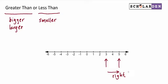That's straightforward when we're talking about positive numbers. We know 2 is greater than 1 because 2 is to the right of 1. When it gets to negative numbers, it starts to be a little counterintuitive. Let's look at the same example with negative 5 and negative 2.